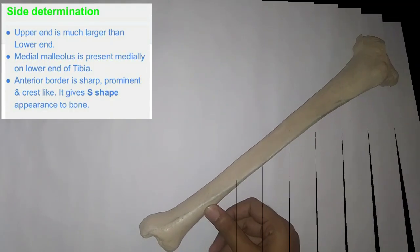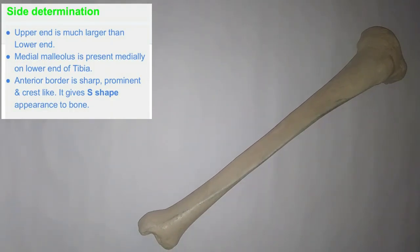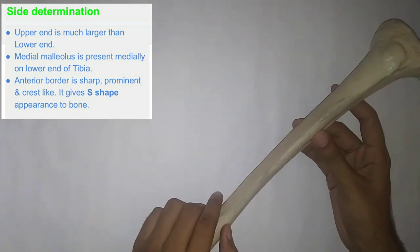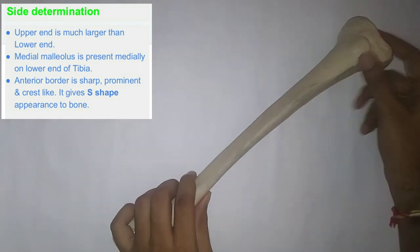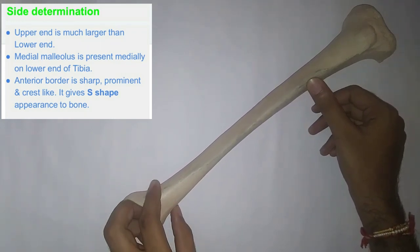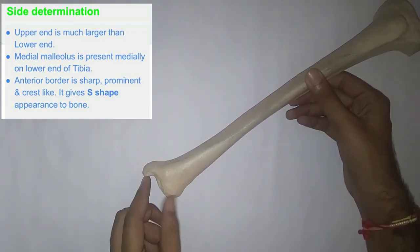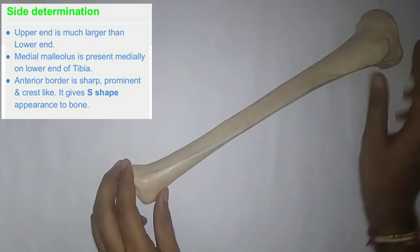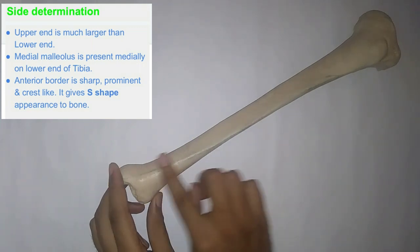Now that we are done with general features, let's discuss side determination. Since most details were already covered in general features, side determination becomes easier. The key points are: first, the upper end is much larger than the lower end; second, the medial malleolus projects downward and lies medially; third, the anterior border is sharp and prominent, giving an S-shape appearance to the bone.